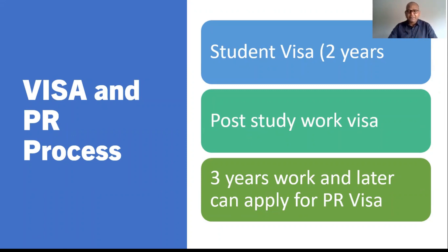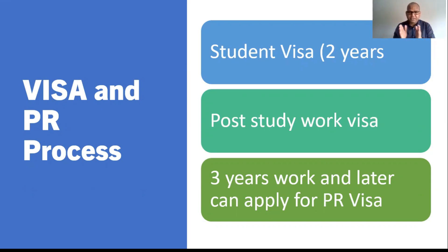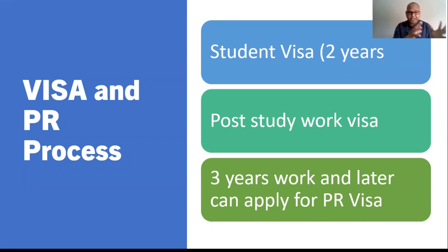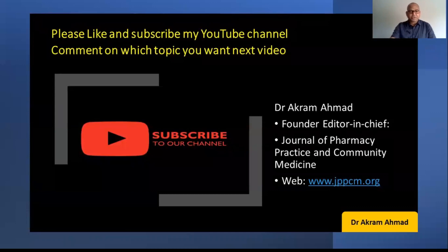After working for three years, you can apply for PR. Compared to Australia, where you can get PR immediately after completing a master's in nursing or pharmacy, in the UK you must work three years first. Despite that, this course is highly recommended if you are planning to go to the UK — there is a lot of demand right now and the next ten years will see increasing need, as physicians want to reduce their workload and physician associates can work alongside them. Please like and subscribe so I can make more videos. Thank you.